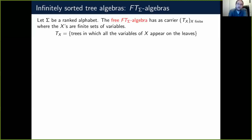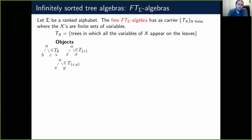Let's look at a few examples. First, a tree a, b, c with no variables — only three letters — is in the sort T of the empty set. For a second tree a, x, x, we have one variable x that appears twice, so it is in the sort T_x. For a third tree a, x, y, we have two variables x and y, so it is in the sort T_{x,y}.